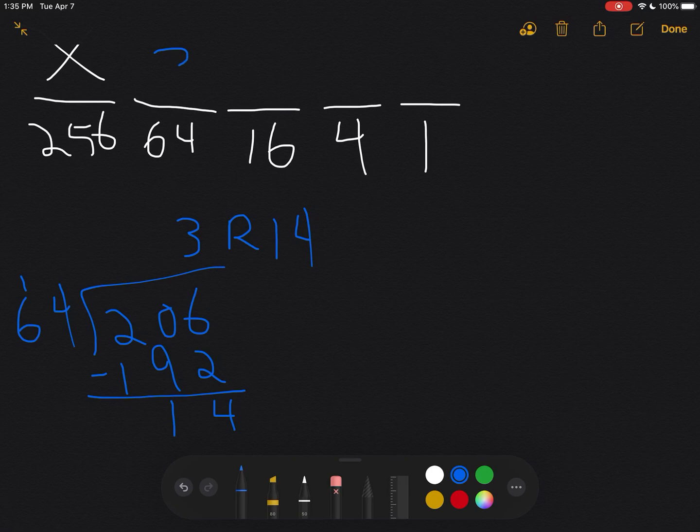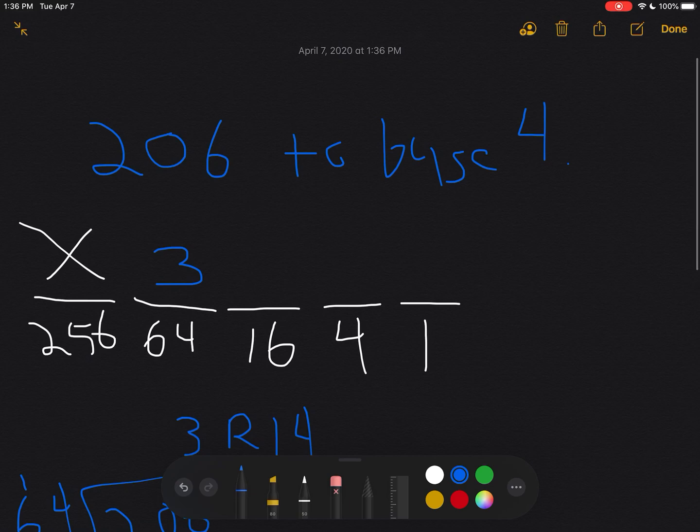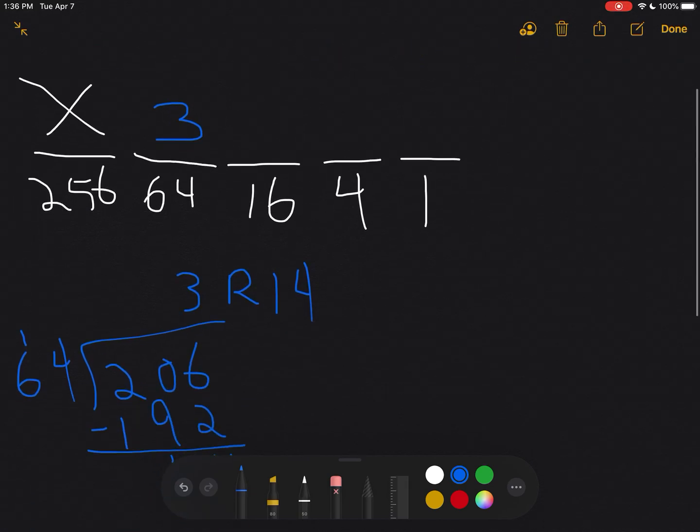That means by putting a three in the 64s place, I'm taking care of 192 of the value here, and I only have 14 left to deal with.